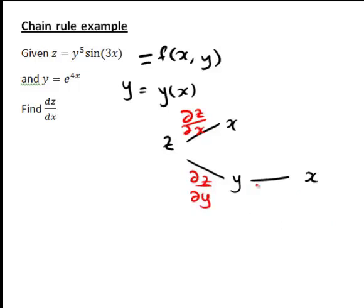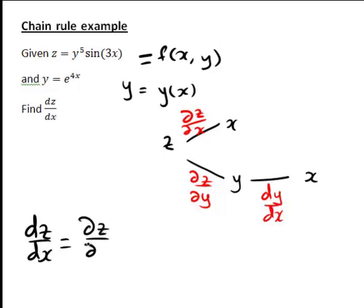But y is a function of a single variable x. So at that stage, we're also going to need to compute the full derivative dy/dx. And that means that to calculate dz/dx, following this branch, it's going to be the partial derivative ∂z/∂x, plus, following this branch, the partial derivative ∂z/∂y times dy/dx.